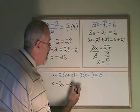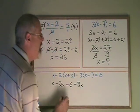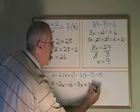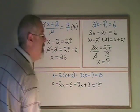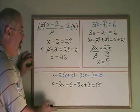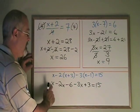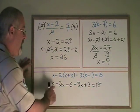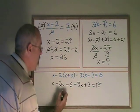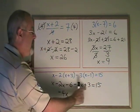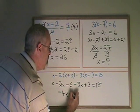Minus 3 times x is minus 3x, and minus 3 times minus 1 is plus 3. Now we no longer have the brackets or the multiplications. What we have is a series of terms in x or in numbers that can be combined. x minus 2x minus 3x combines to minus 4x, and minus 6 plus 3 combines to minus 3.